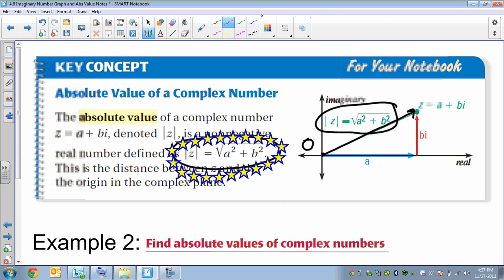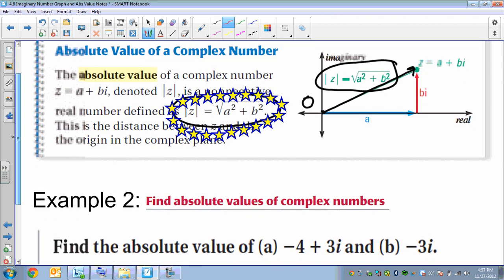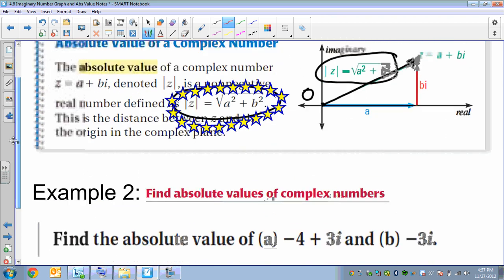So again, these problems are pretty simple, I hope. We've done the distance formula before. It shouldn't be anything mind-blowing there. But that's how you find the absolute value of this. It's really, again, it's just, it's called the absolute value, but it's really just the distance from the center, from the origin out to your point. That's all we're really finding.